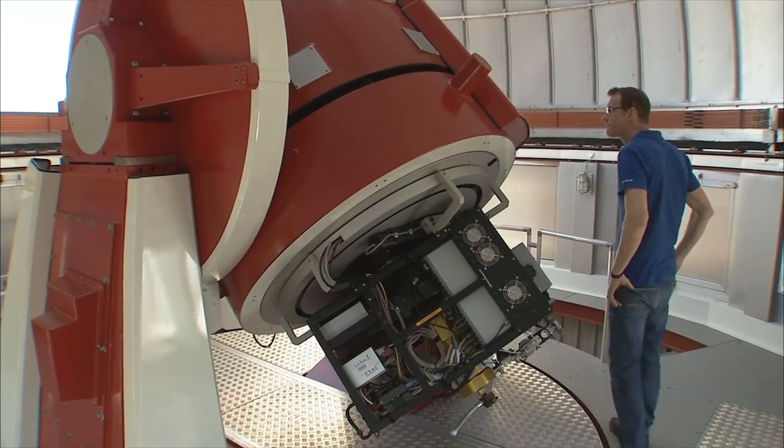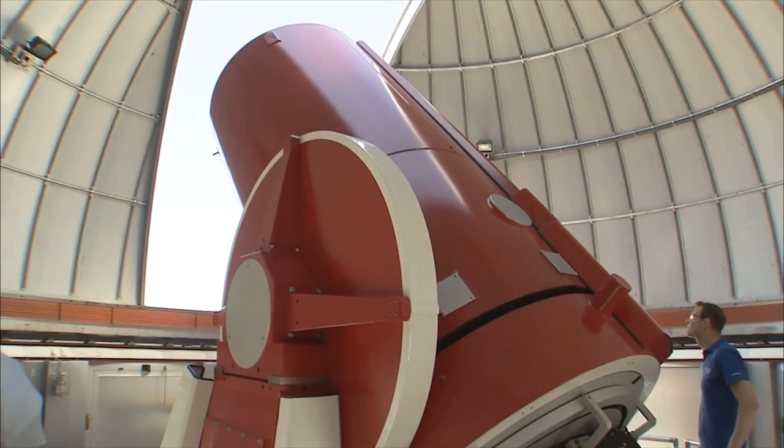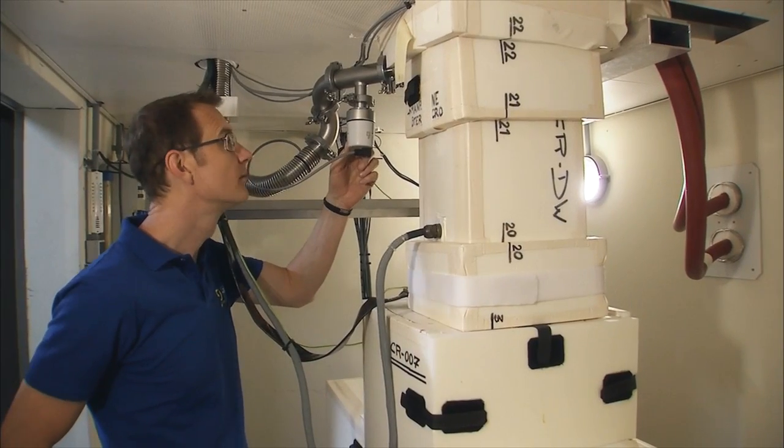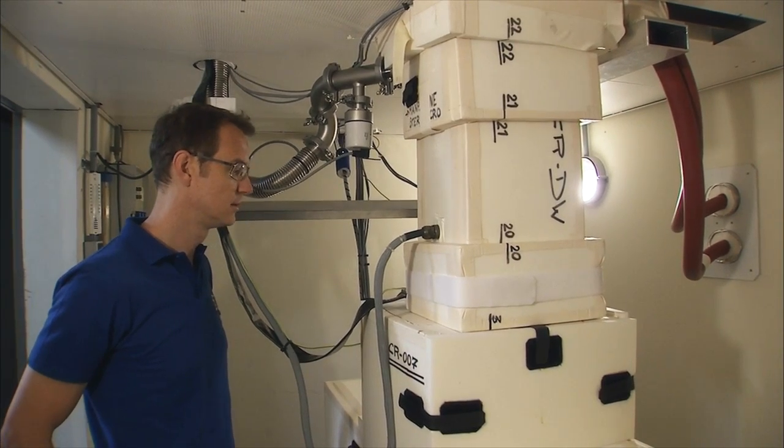Here's the Coralie spectrograph, mounted on the Swiss Leonard Euler Telescope. It measures the tiny wobbles of stars caused by the gravity of orbiting planets.